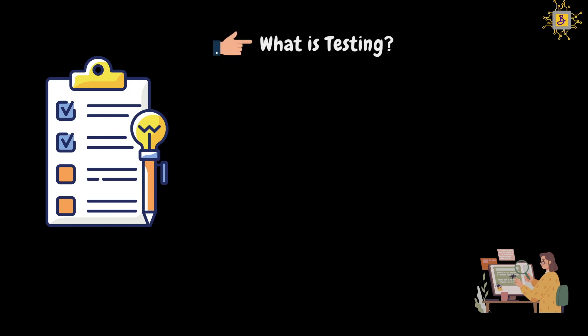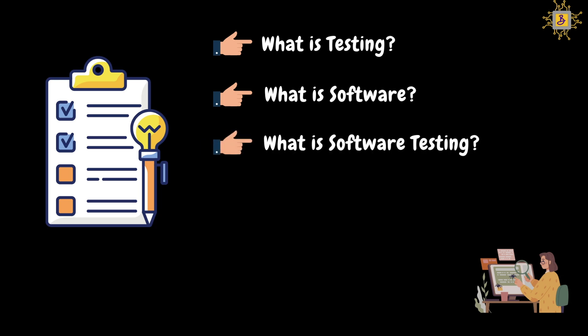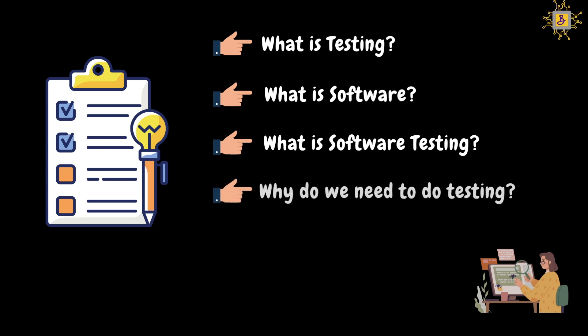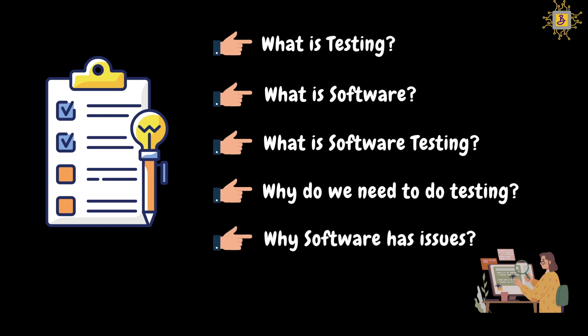First, let's look at what testing is with some real-time examples. Next, we will look at what software is, the different types, and their differences. After that, we'll cover software testing, functionality with real-time examples, why testing should be done, and what issues appear in actual software.